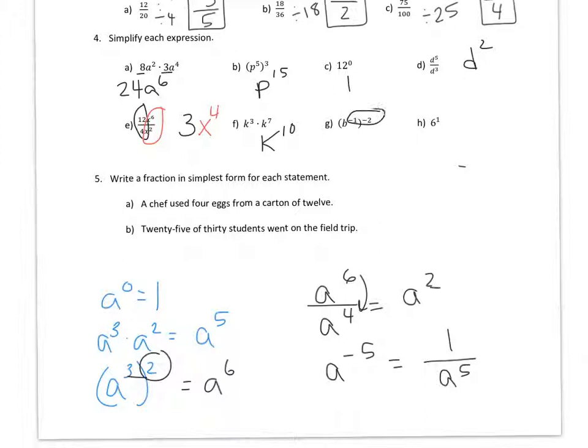G, you're going to multiply these, so it's B squared. And then H is 6 to the 1 power, which is just 6.